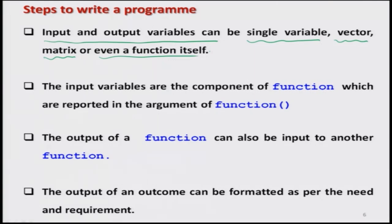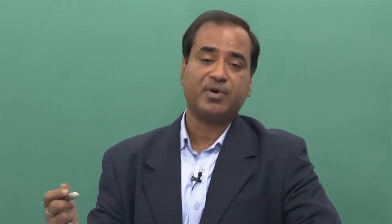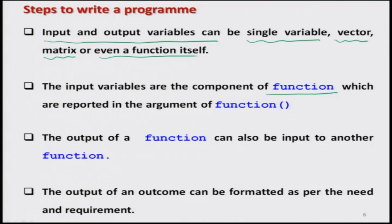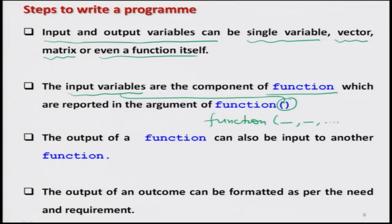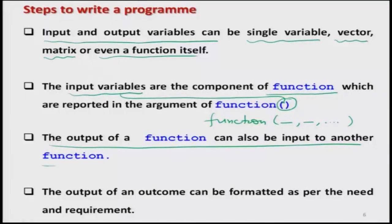When we want to write a program, we take the help of a function. A function has two components: one is the syntax — the keyword FUNCTION — and then there is an argument. Whatever are the input variables, they are written inside the argument, for example variable1, variable2, and so on separated by commas. One important thing: whatever is the outcome of a function can also be used as input to another function — that is a very important feature of R.